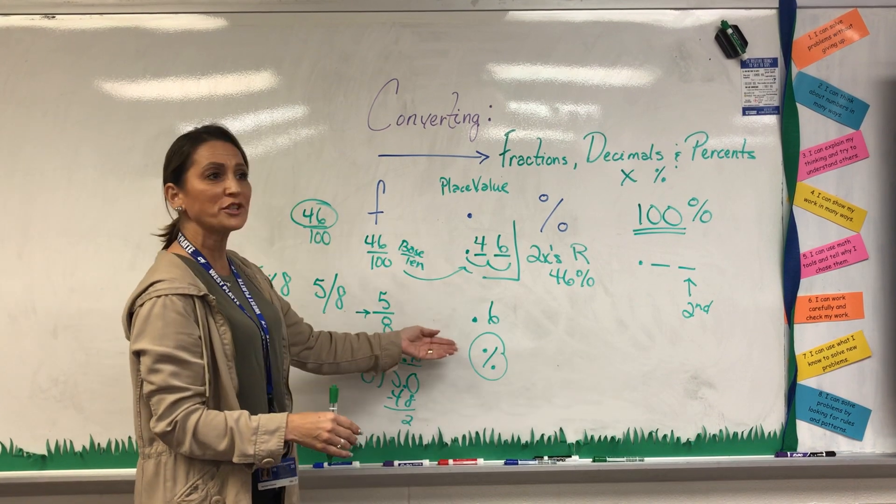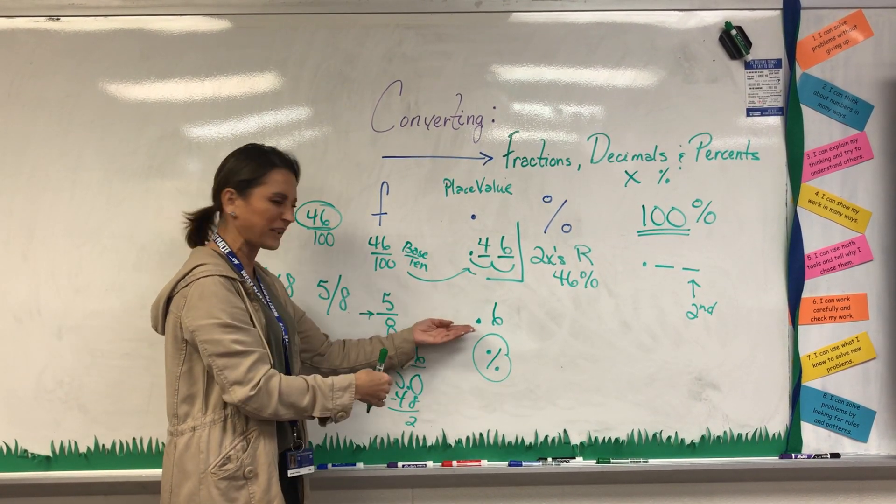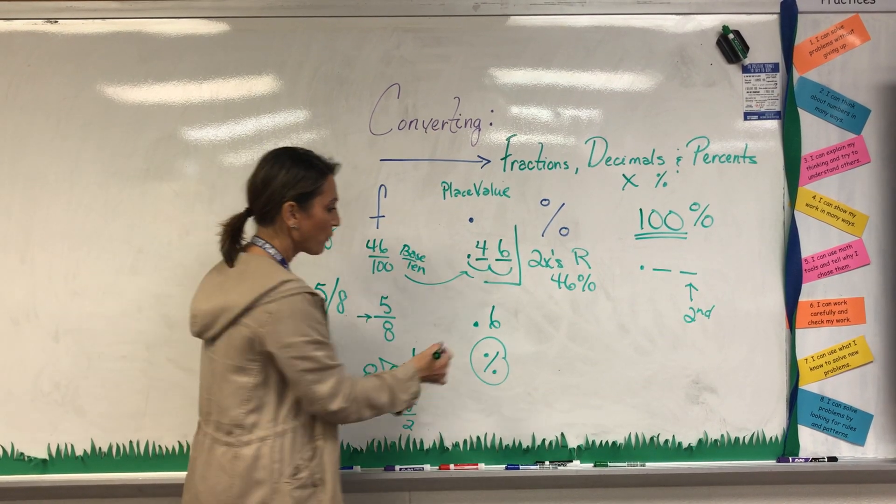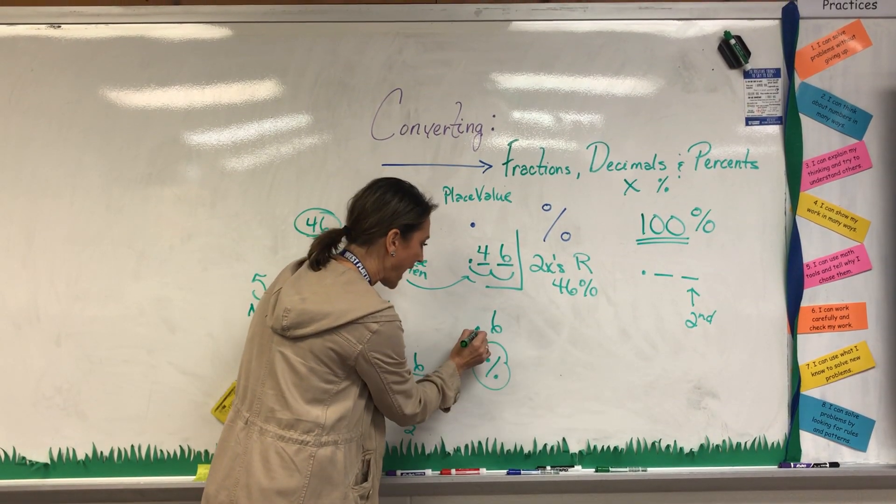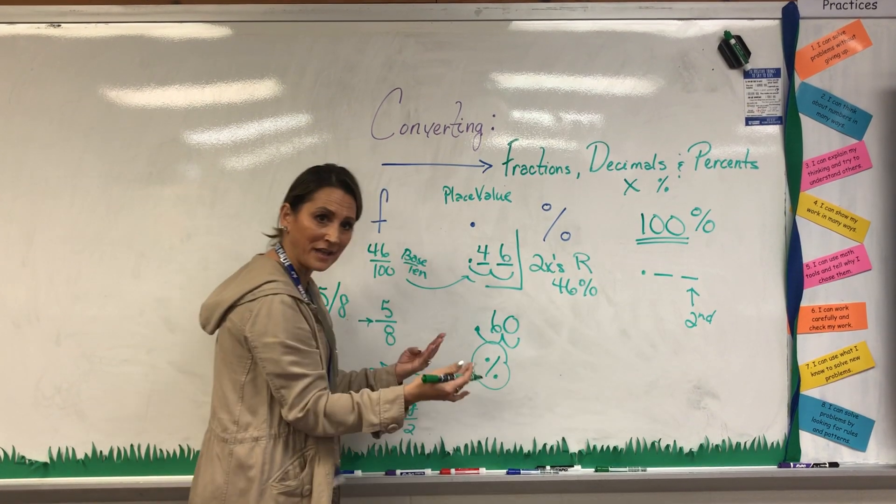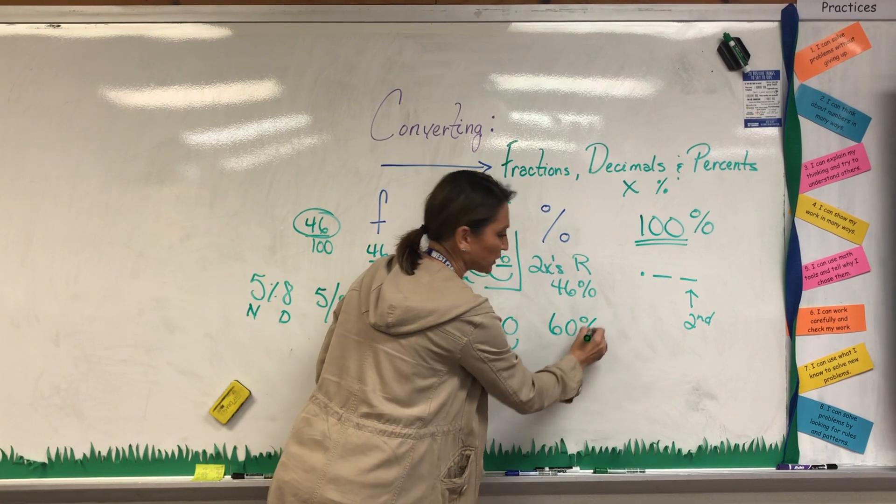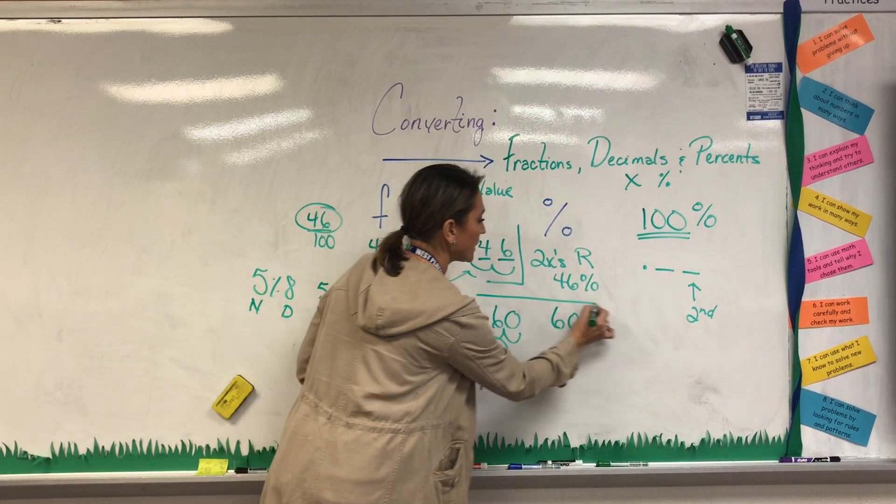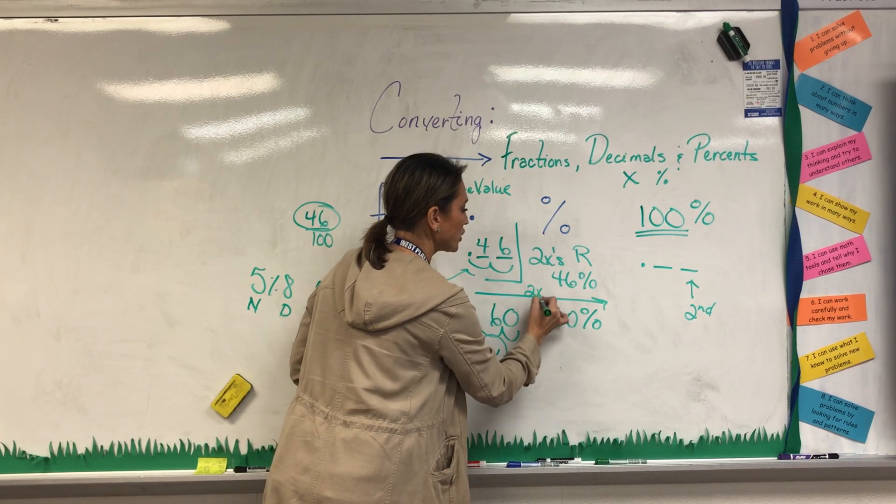It gets more difficult if they see something and say 5 eighths was really 0.6. How do I move that decimal? Well, I don't see two spots, but I know I can still go once, twice, meaning in the hundreds position, and I would get 60%. So no matter what, I'm moving that decimal to the right two times.